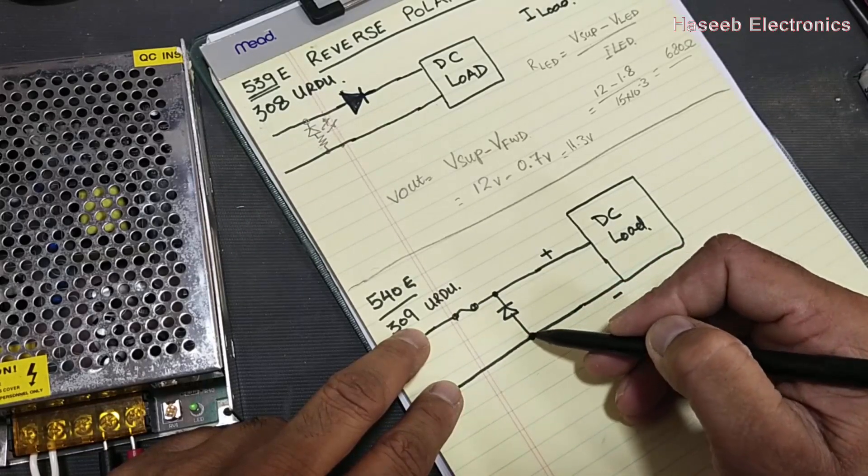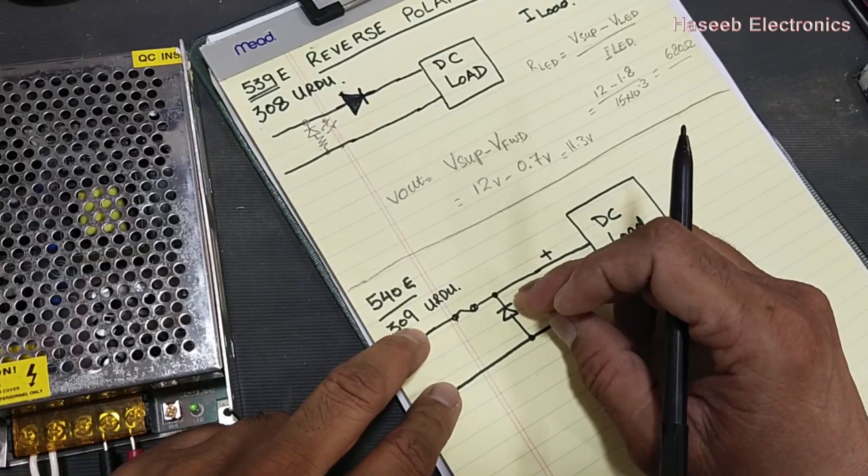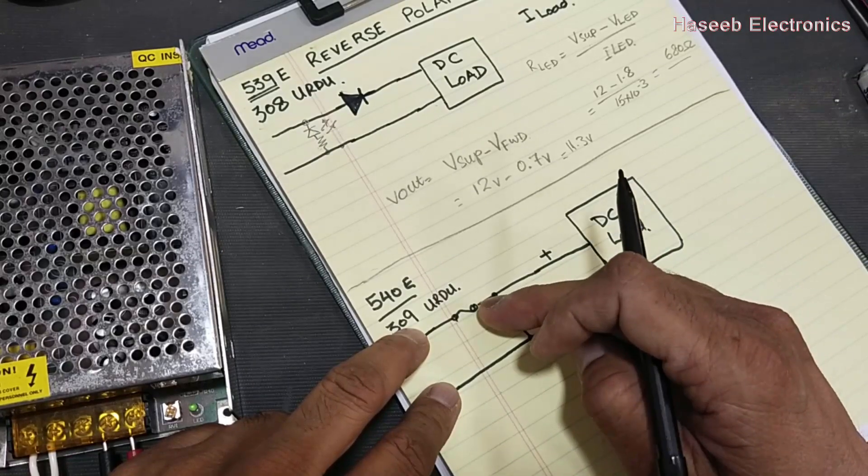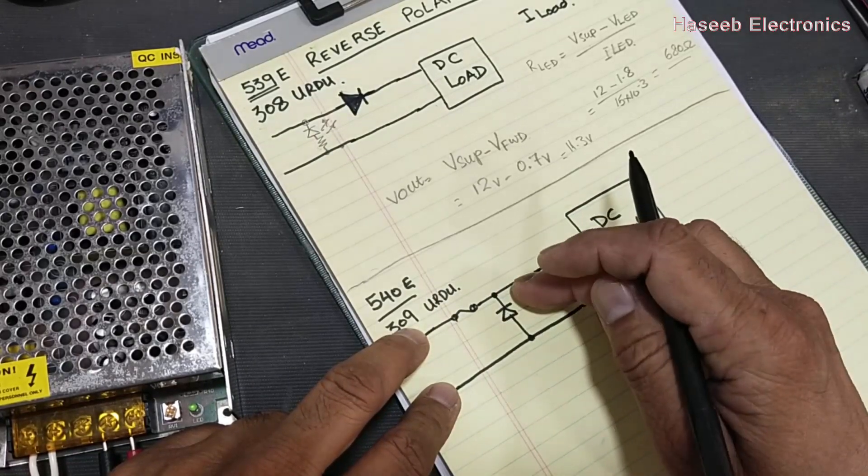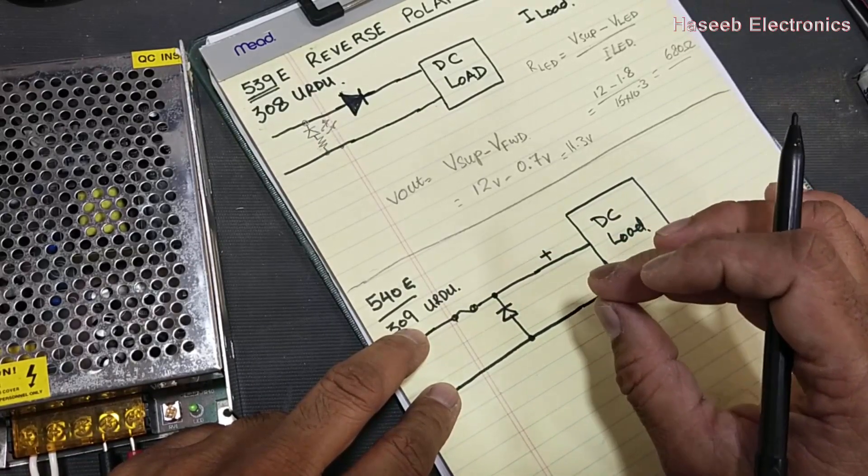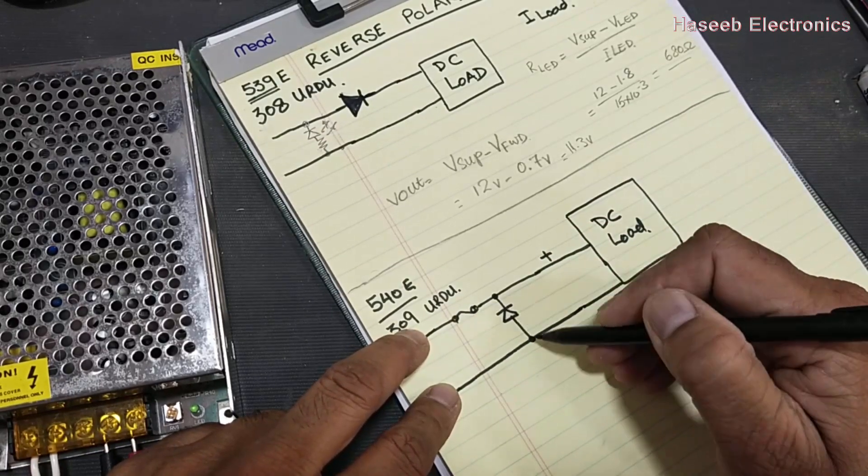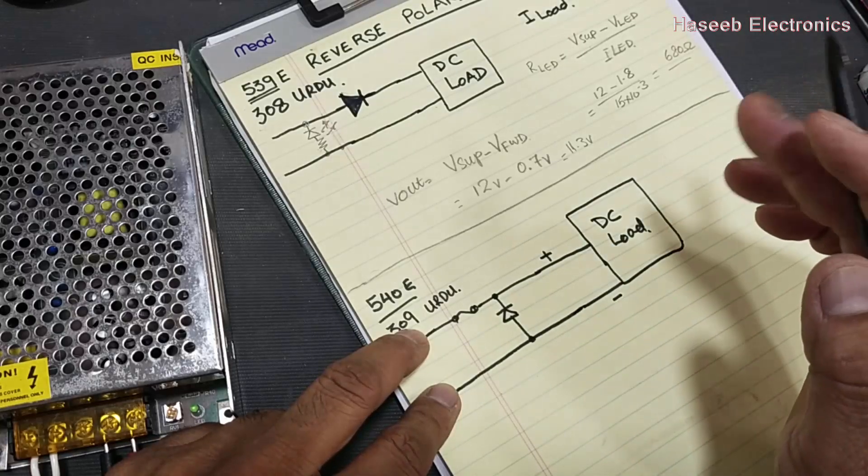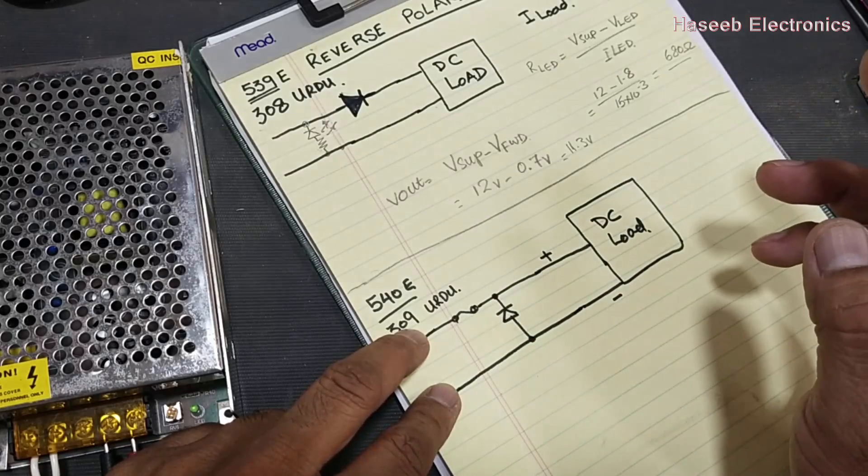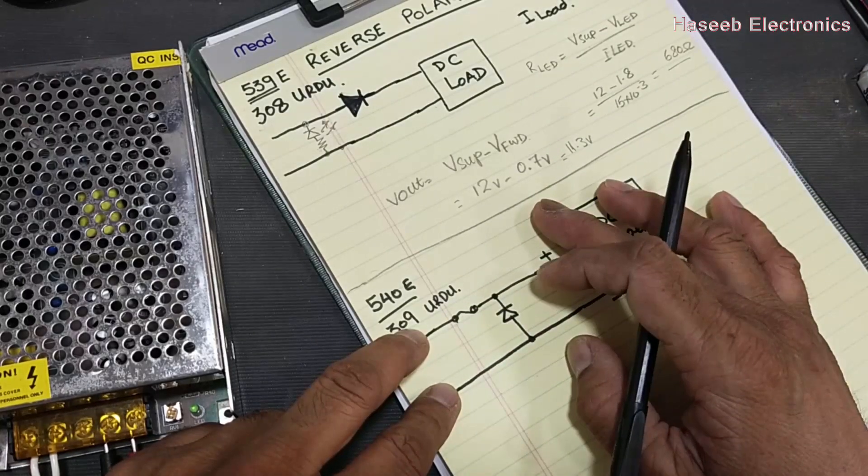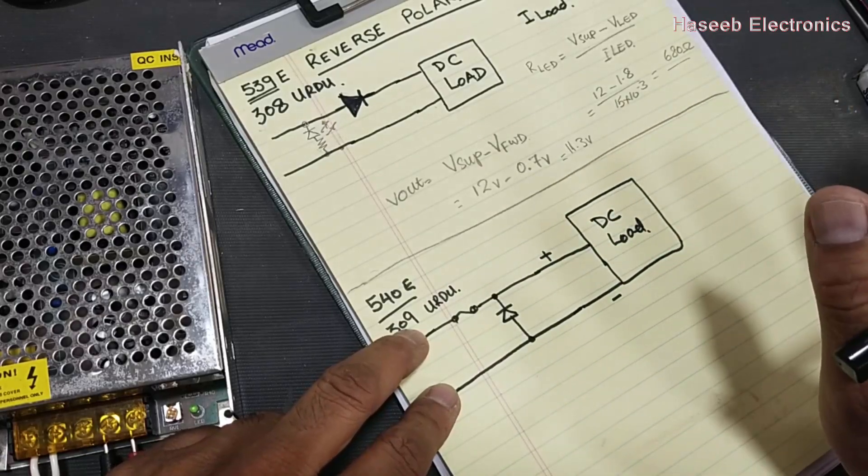If we reverse the polarity, negative here, positive here, positive will reach here, negative will reach here. So this diode will immediately conduct and it will drop 0.7 volts and it will cause maximum current to flow based on its rated value. When maximum current will flow, this fuse will open, it will burn out.